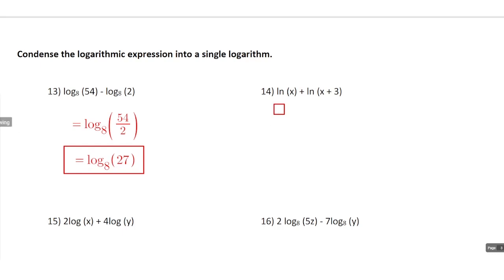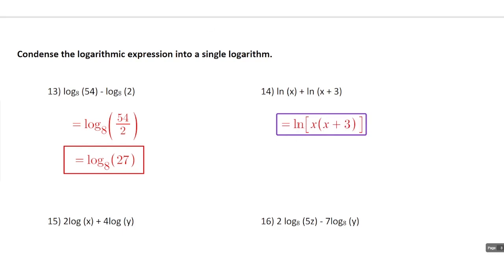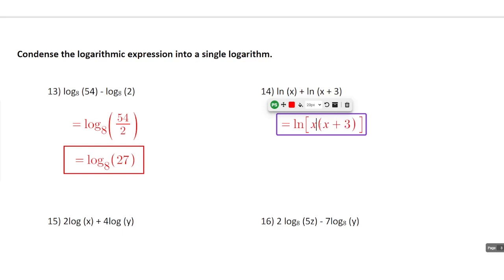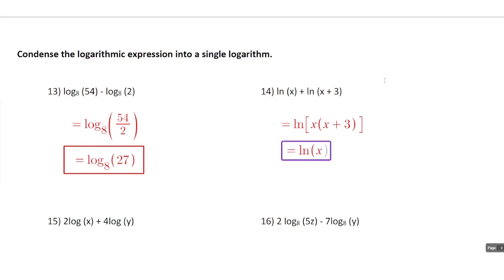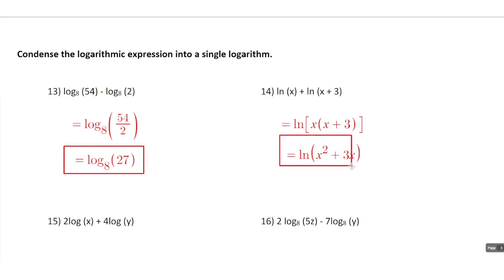For number 14 we'll use the product property, and rewrite this as the natural log of x times (x + 3). I'll use brackets to make the grouping symbols clearer. If I multiply those together I get the natural log of x squared plus 3x.